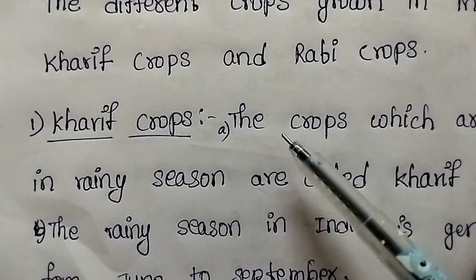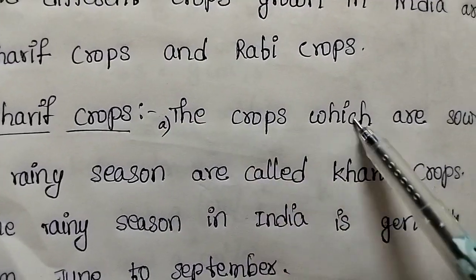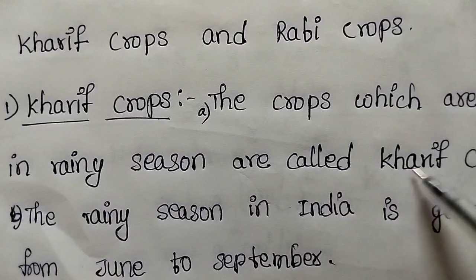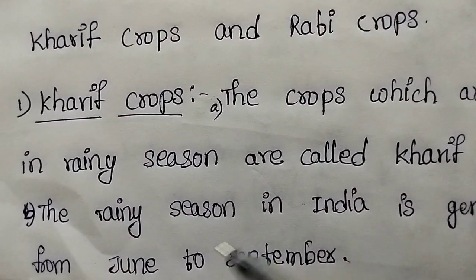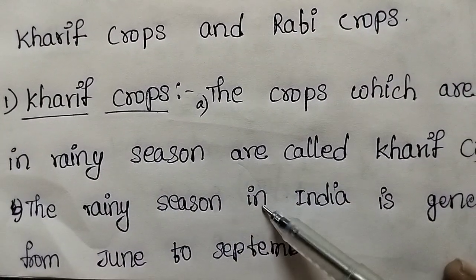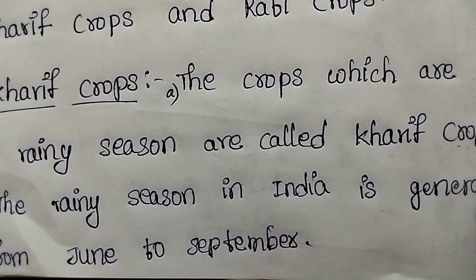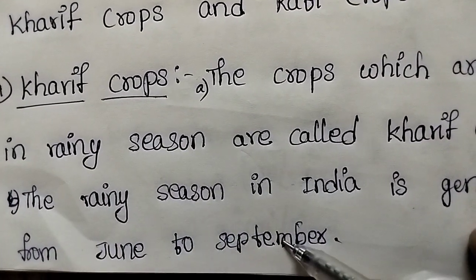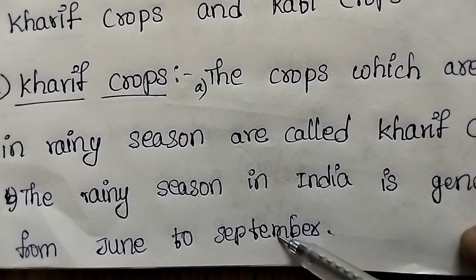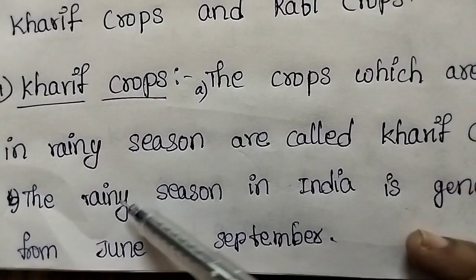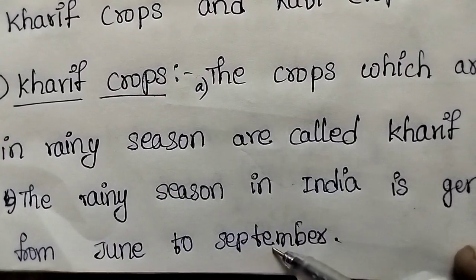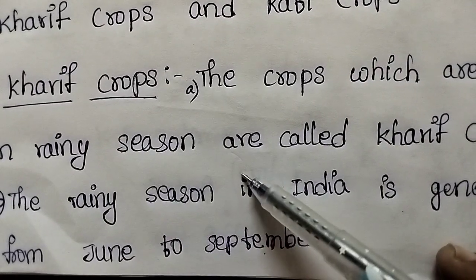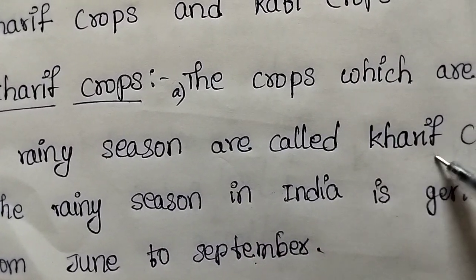Kharif crops. The crops which are sown in the rainy season are called Kharif crops. The rainy season in India is generally from June to September.